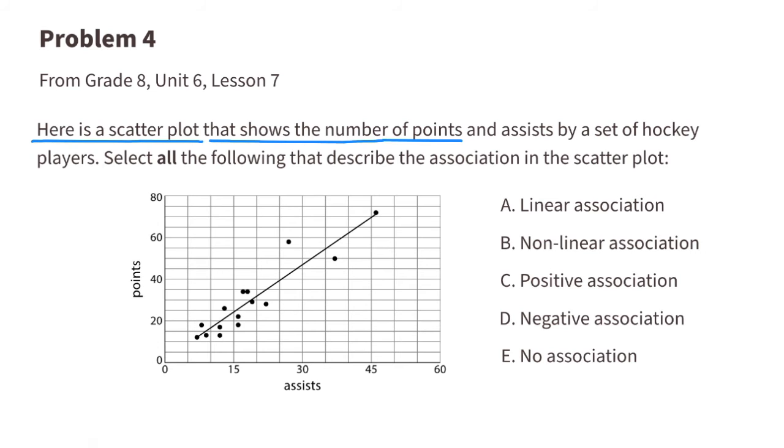Problem number 4 from 8th grade Unit 6 Lesson 7. Here's a scatter plot that shows the number of points and assists by a set of hockey players. Select all the following that describe the association in the scatter plot.